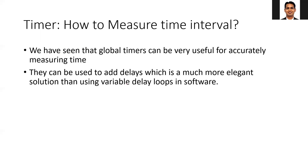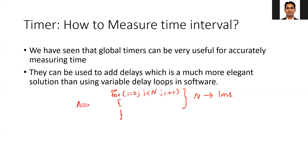One option is to use a for loop — for example, `for (i = 0; i < n; i++)` as an empty loop — and by empirical observation, choose the value of n to give a total delay of one millisecond. But this is not accurate, because the for loop is nothing but a set of instructions, and sometimes those instructions may execute faster and sometimes slower. This way of generating a delay may not be accurate.